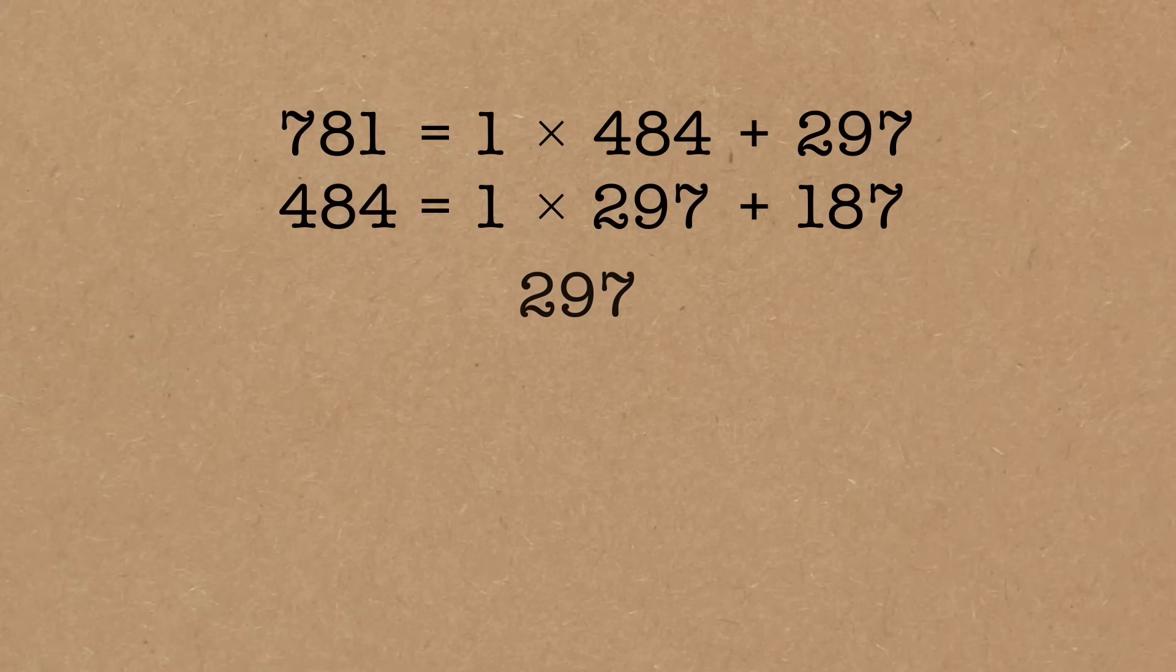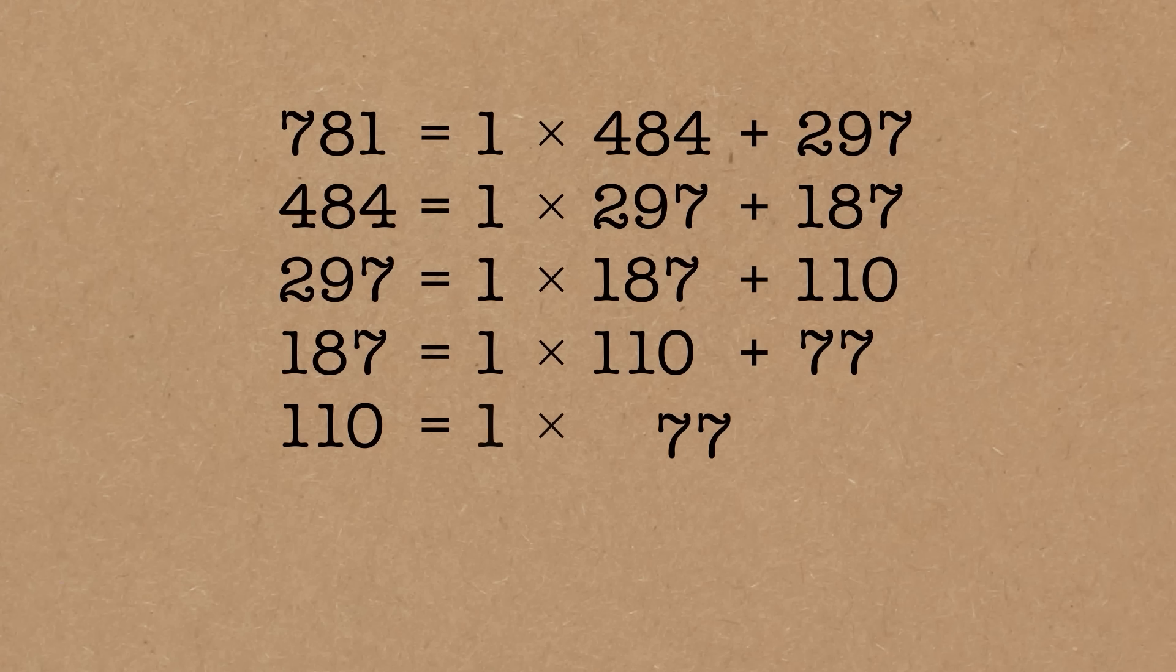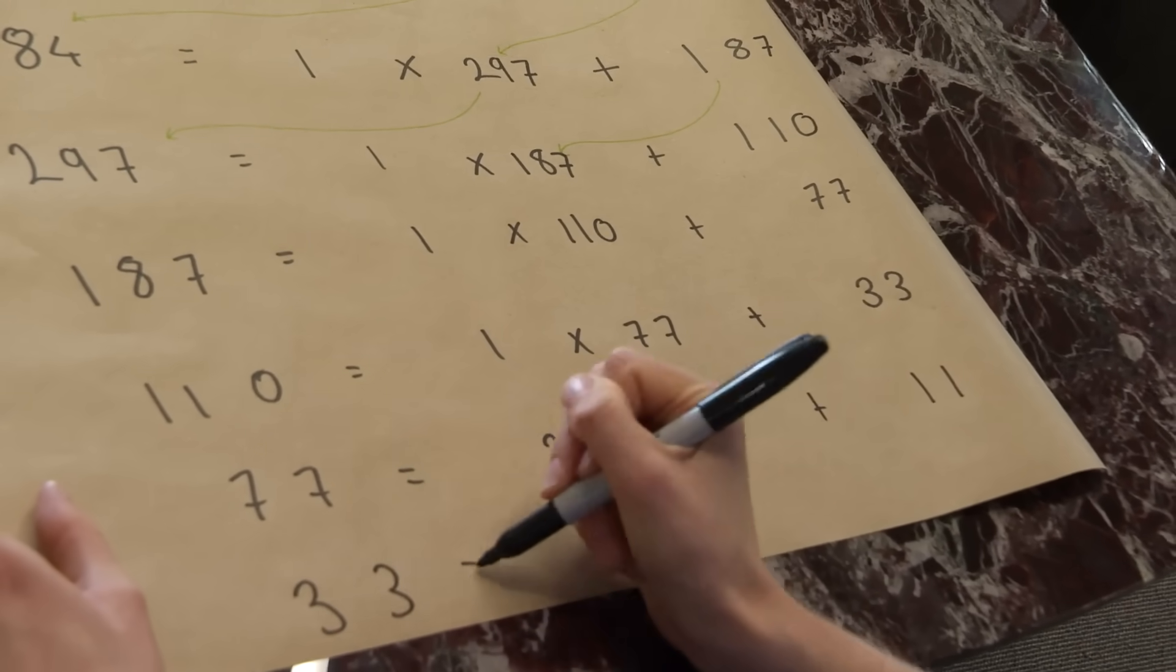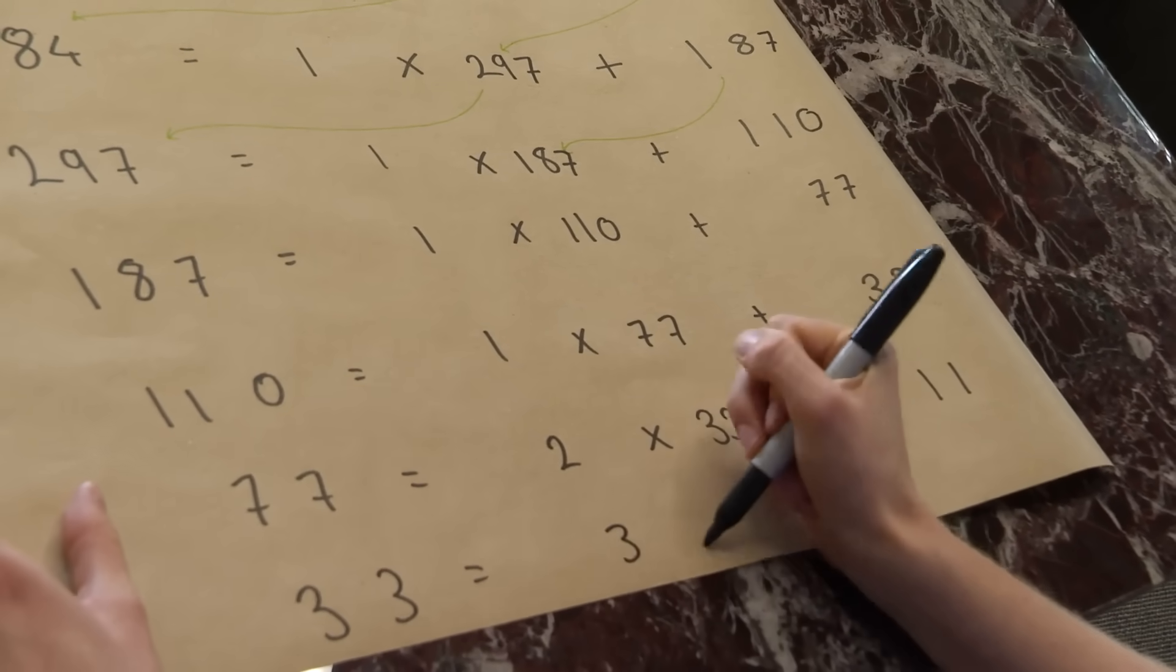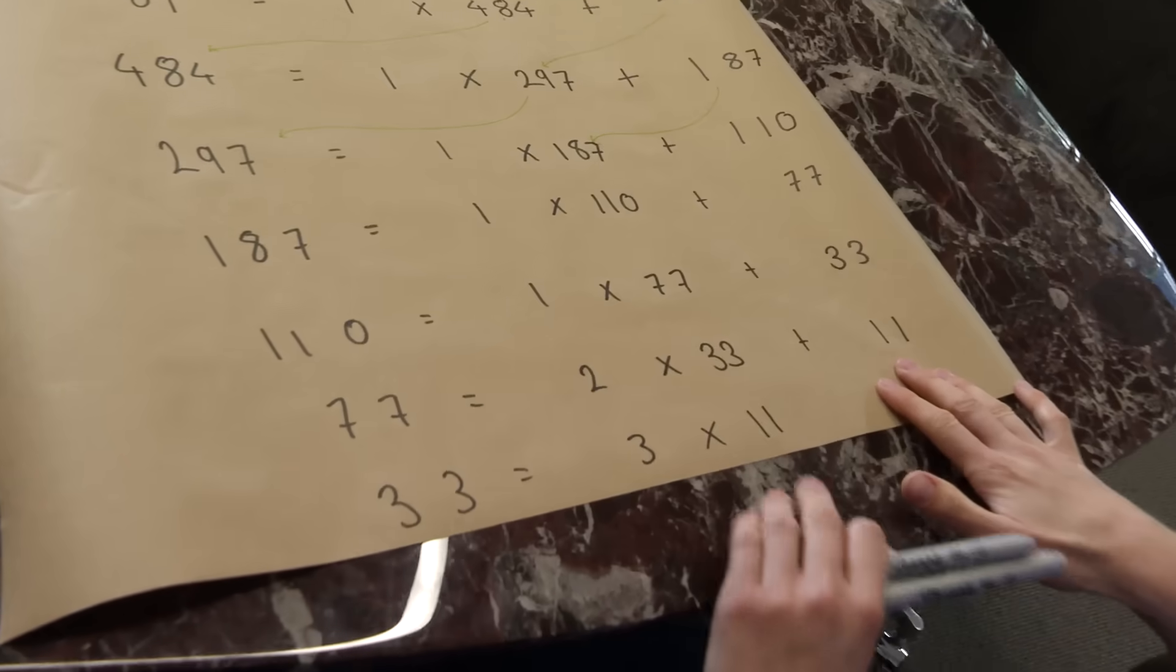So now we repeat 297 goes here, 187 goes here. And again, this is one and that's a remainder. This one's easy, 110. And we keep going and hope we don't run out of paper. Plus 77, 110 equals 1 times 77 plus 33. 77 equals 2 times 33. Oh, at last. Plus 11. 33 then equals 3 times 11 with no remainder. So we stop here. That's the stop point when you've got no remainder.